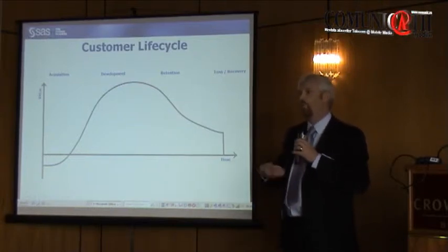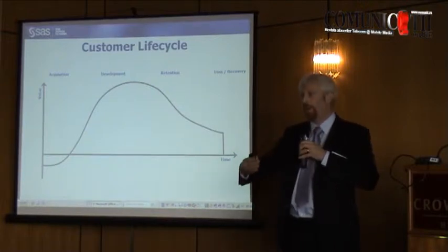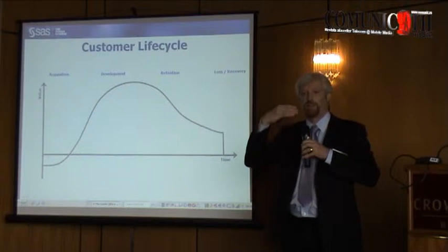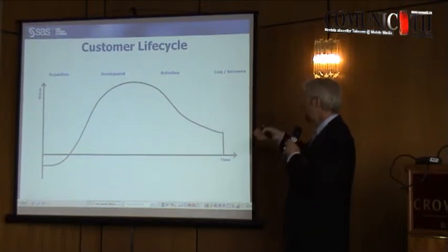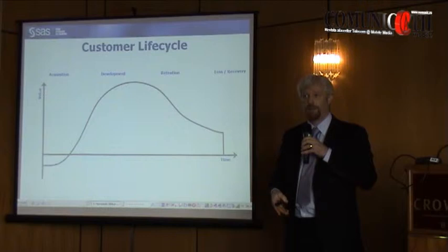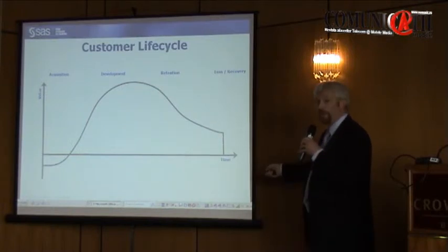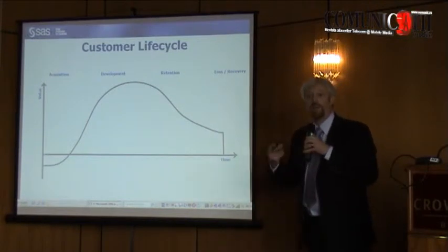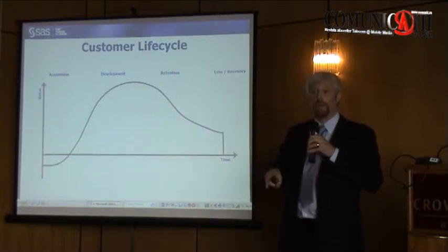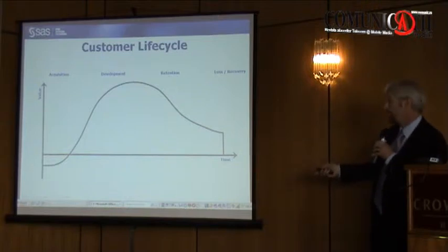A difficult part of the life cycle is that at some point that value will potentially decay. Your task is to extend that as much as possible, or at least manage that decay. And if they do leave you and drop off, your next task is to work out which ones you want to get back and how to do it.